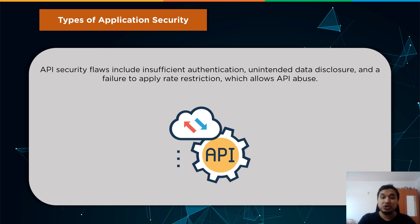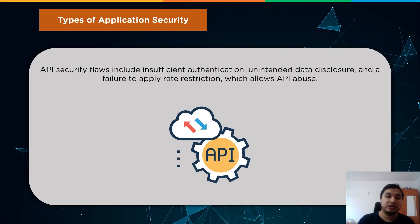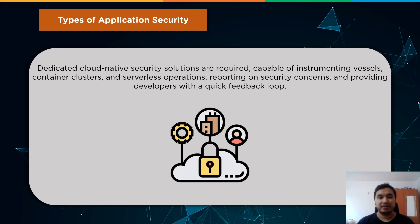When it comes to APIs, security flaws in APIs are the root of many major data breaches. They have the potential to reveal sensitive data and disrupt vital corporate processes. API security flaws include insufficient authentication, unintended data disclosure, and a failure to apply rate restriction, which allows API abuse. The requirement for API security has led to the creation of sophisticated equipment that can discover API vulnerabilities and protect APIs in production.